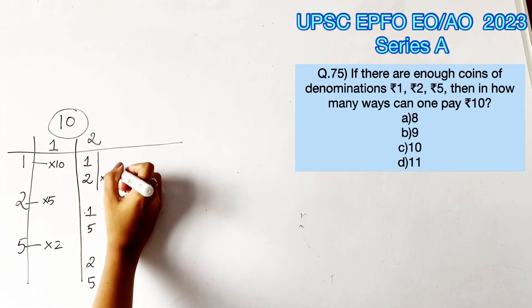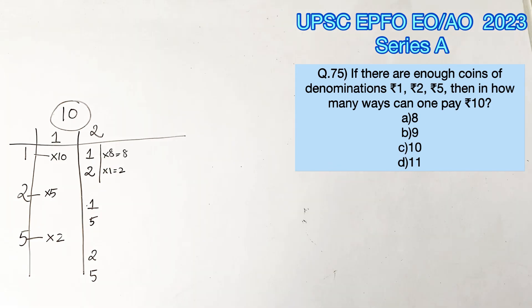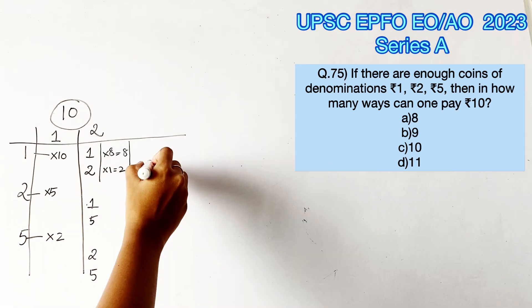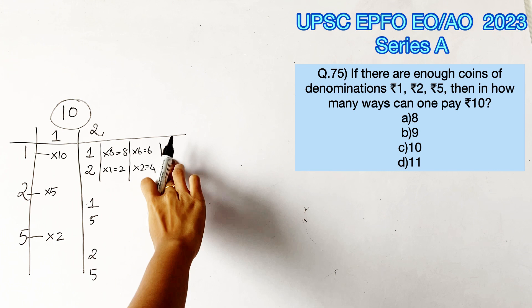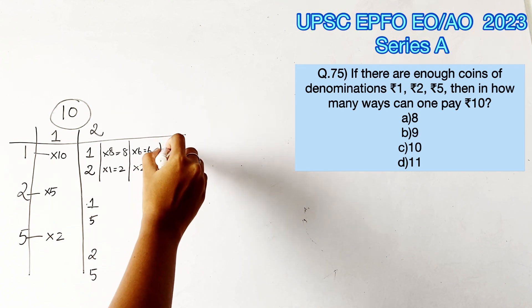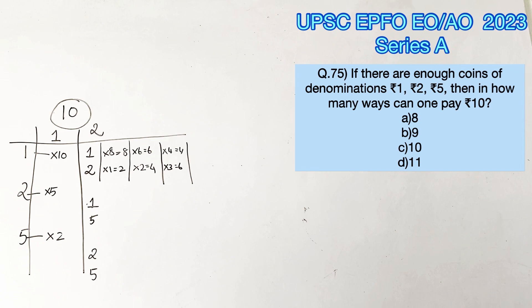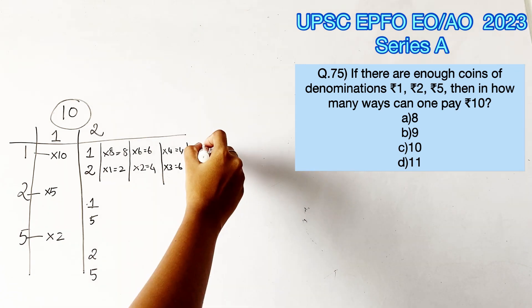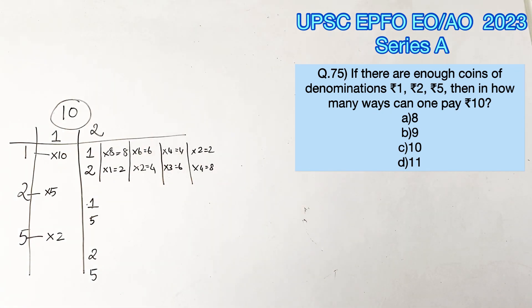For 1-rupee and 2-rupee coins: taking one 2-rupee coin leaves 8 rupees paid by 1-rupee coins; taking two 2-rupee coins (4 rupees) leaves 6 rupees; taking three 2-rupee coins (6 rupees) leaves 4 rupees; and taking four 2-rupee coins (8 rupees) leaves the remaining 2 rupees paid with 1-rupee coins.